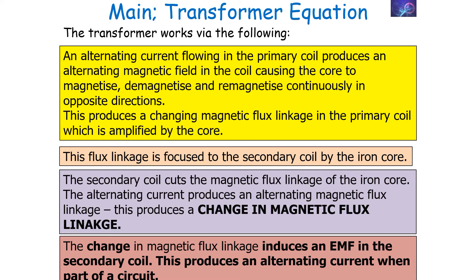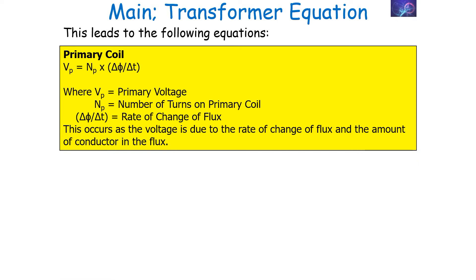This leads to the following equations in a transformer. From Faraday's law of induction, the induced EMF is equal to the number of turns times by the change in flux over time, or the rate of change of flux. We can write this for the primary coil as VP equals NP times by the rate of change of flux linkage, delta-Φ over delta-t.